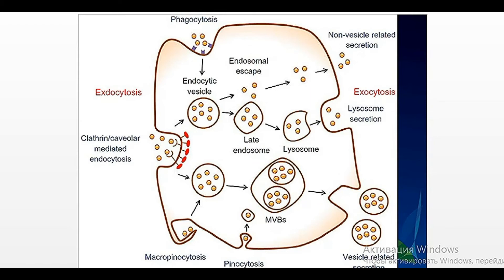Next example is transcytosis. Transcytosis is a type of exocytosis where a substance comes into the cell from one side, passes through the cytoplasm without any changes, and leaves the cell from the other side. For example, follicular cells of the thyroid gland: substances come into the cell from the lower part of the cell membrane, from the underlying connective tissue containing blood vessels, and leave the cell through the apical surface without any changes.